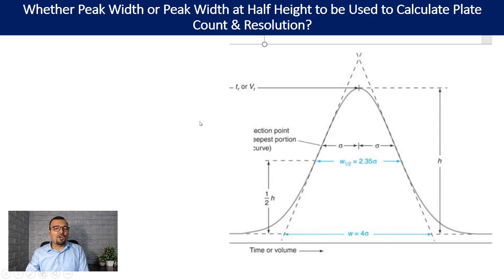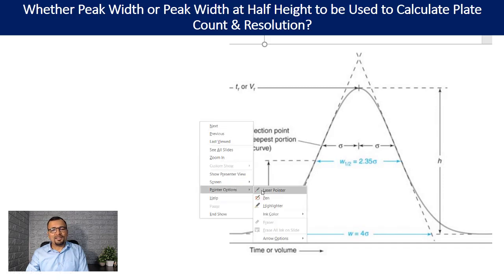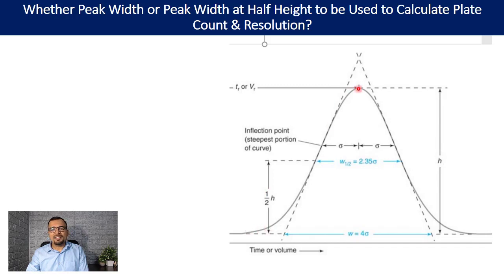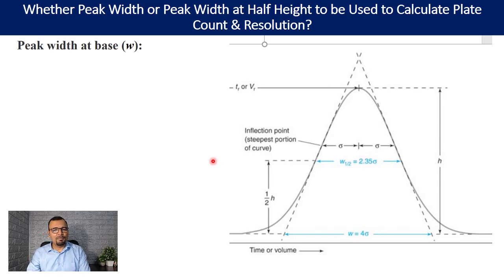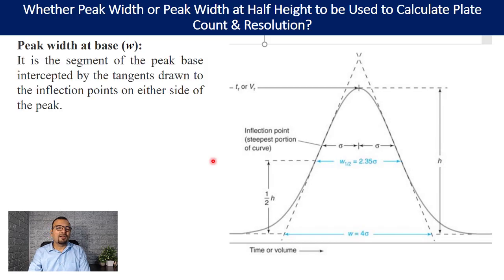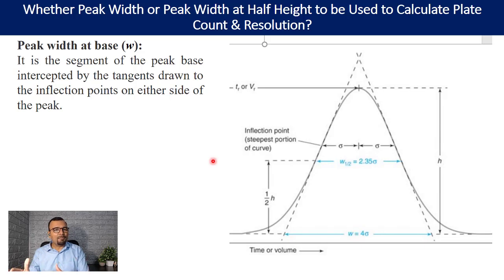Let us assume we have a Gaussian chromatographic peak, represented on screen now. The peak width at base is denoted by W. It is the segment of the peak base intercepted by the tangents drawn to the inflection points on either side of the peak. To define peak width at base, you have to draw tangents by identifying the inflection point — the steepest portion on the curve.